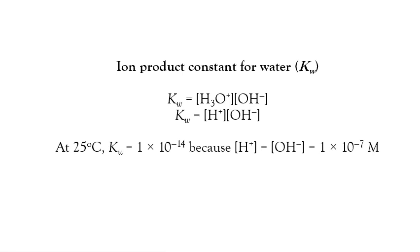Since the equilibrium constant is for water, we represent K as Kw, where W stands for water. We can write it in terms of hydronium ion or hydrogen ion — both are the same. It is temperature dependent, so we must specify the temperature. At 25°C, Kw equals 10 to the power of negative 14. This is because the concentration of both hydrogen ion and hydroxide ion each equal 10 to the power of negative 7 molar.